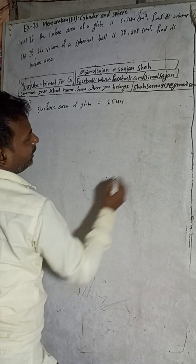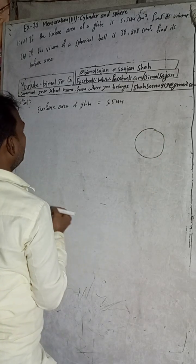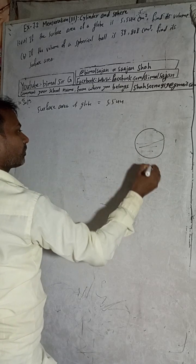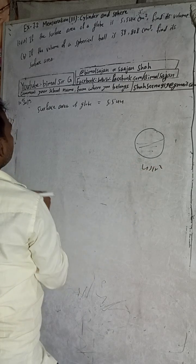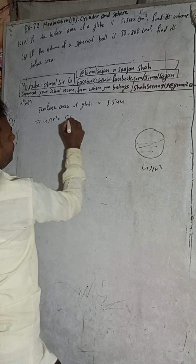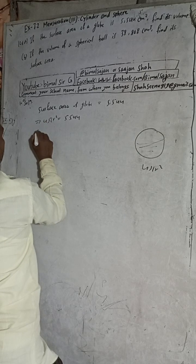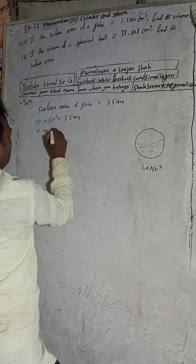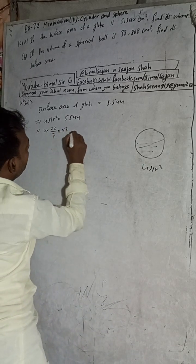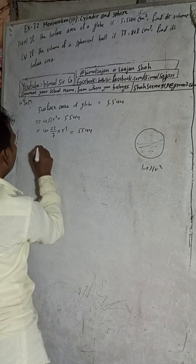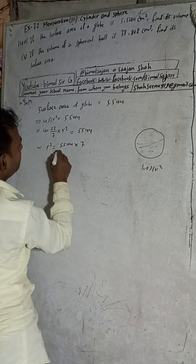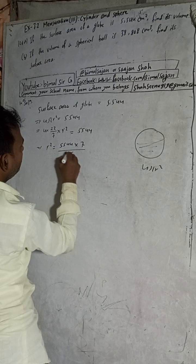The surface area of the globe — a globe has a spherical shape — so the surface area formula is 4πr². We write: 4πr² = 5,544. Substituting π = 22/7, we get 4 × (22/7) × r² = 5,544. Solving for r², we get r² = 5,544 × 7 divided by 4 × 22.